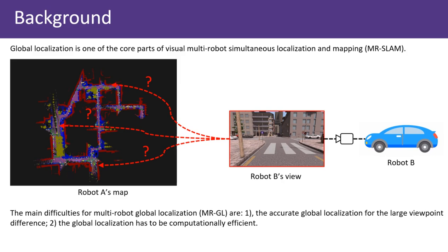The main difficulties for multi-robot global localization are: first, the accurate global localization for the large viewpoint difference; second, the global localization has to be computationally efficient.